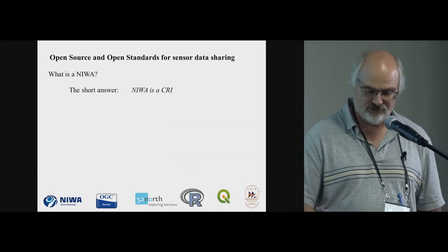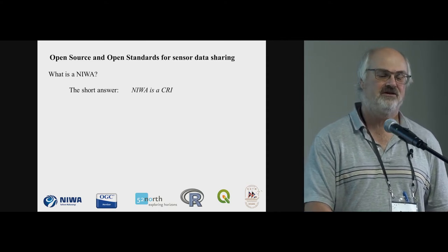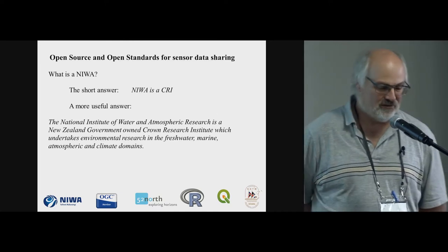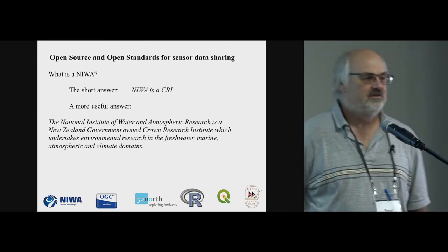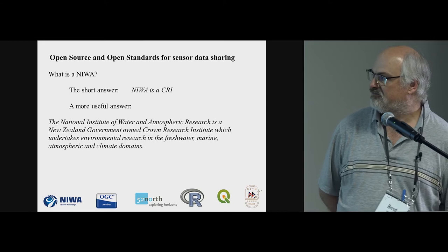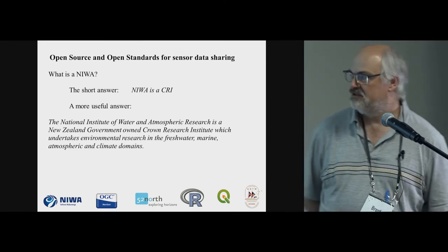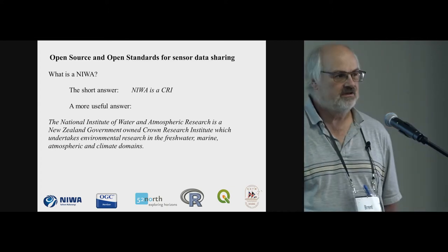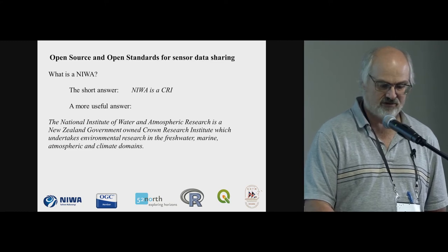That's the easy short answer, which takes people almost nowhere useful whatsoever — it's perfect for Microsoft help. The more useful answer is that a CRI is a government-owned research agency that operates pretty much as a business. It has to find its own funding, and NIWA's domain is in freshwater, marine, atmospheric, and climate research. So that's us in New Zealand.